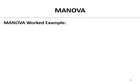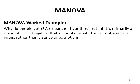All right, let's do one. Why do people vote? A researcher hypothesizes that it is primarily a sense of civic obligation that accounts for whether or not someone votes, rather than a sense of patriotism. Reading that hypothesis — and this is real data — the word 'primary' literally tells us that sense of civic obligation is the most important DV. They think that's what differs most between people who vote and those who don't. Not really sense of patriotism. So they have ordered their DVs.